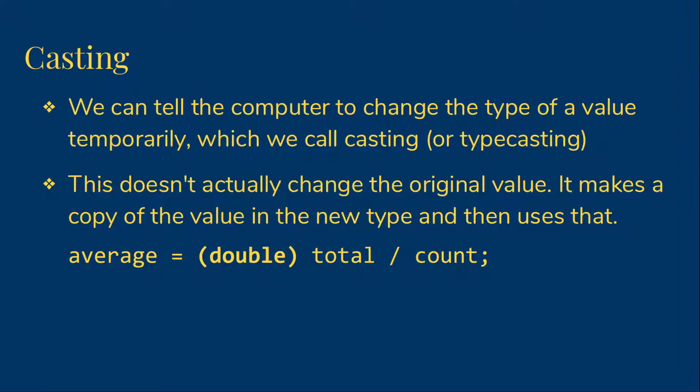The syntax is to put the type name in parentheses in front of the value to be typecast. So our average calculation then becomes average = (double) total / count. The cast converts the value in total to a double, and then the division is floating point division, so the result is what we want.